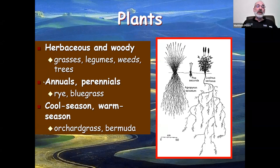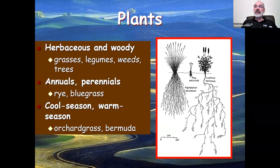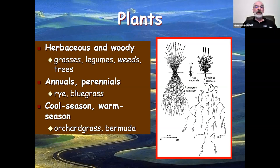We can also talk about annuals and perennials. Annuals have a very short lifespan — less than one year. They're like sprinters: they come up, grow very quickly, make seed very quickly, and then die. Whereas perennials live for many years — they come out slower and typically grow slower in the early years, but then get well established and can continue to produce for many years. We need to understand the balance of those.